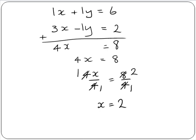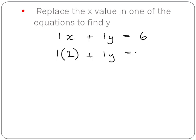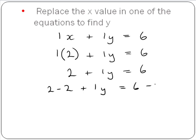Now that we have a value for x, we replace the x value in one of our equations to find y. Looking at our first equation, 1x plus 1y equals 6, and our x value is 2, so we replace x with 2. Now we're left with 2 plus 1y equals 6. We subtract 2 from both sides: 2 minus 2 is 0, so we have plus 1y on the left-hand side, and 6 minus 2 gives us 4.